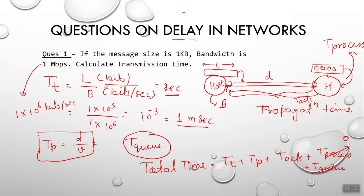Processing time is very small so we can assume it as zero. For acknowledgement time, if the question says to neglect it, ignore it; otherwise assume it equals tp. So the total time becomes: tt + 2×tp. Be careful — if acknowledgement is given as zero, ignore that term; otherwise use this formula.